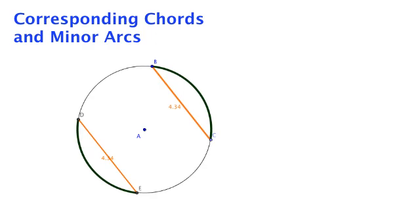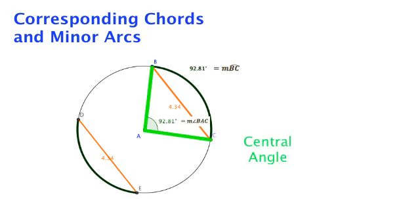To do this, we have to remember a couple things. First, we have to remember that the measure of an arc is equal to the measure of its central angle. And a central angle is the angle formed by the arc's endpoints and the center of the circle.